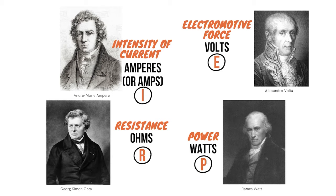The second is how we refer to the intensity of the electrical current, which you might think of as the current's speed. This intensity is measured in amperes, or amps for short, named after the French scientist André-Marie Ampère. The third is resistance, which describes how freely the electrons are allowed to move. Resistance is measured in ohms, named after the German scientist Georg Ohm.